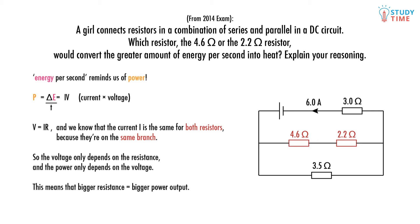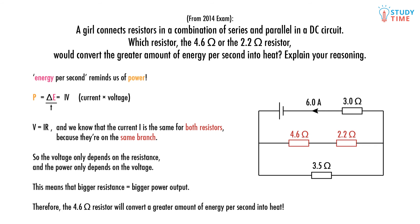We can then apply this knowledge with power equals current times voltage to figure out that the resistor with the greater voltage — the 4.6 ohm one — will have a greater power output than the resistor with the lower voltage. Therefore, the 4.6 ohm resistor will convert a greater amount of energy per second into heat, and we figured that out just by looking at our equations without substituting in any numbers.